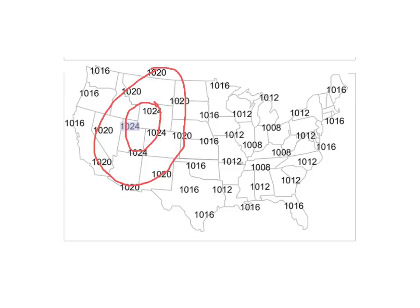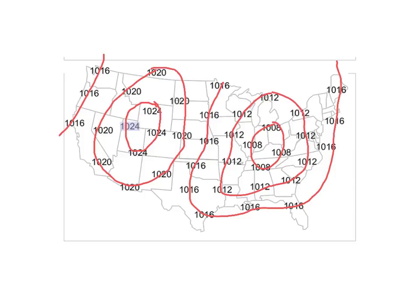To get all the rest of the numbers: we have 1016 here, then the 1016s, then 1012, and 1008. You'll notice I did not connect the 1016s right here at the top, and the reason is we don't really know what's happening up in Canada. If you don't have that information, don't worry about connecting anything there. So here are our isobars — equal lines of pressure.